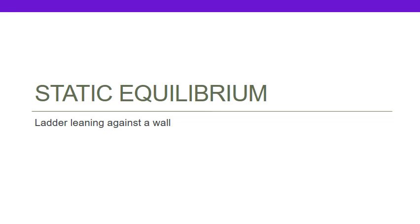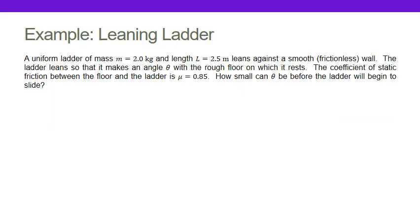In this video, we'll look at a classic example of static equilibrium: that of a ladder leaning against a wall. We have a ladder leaning against a wall, and we'd like to work out how small the angle between the ladder and the floor can be before the ladder will slide away from the wall.